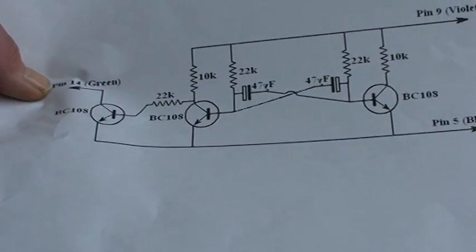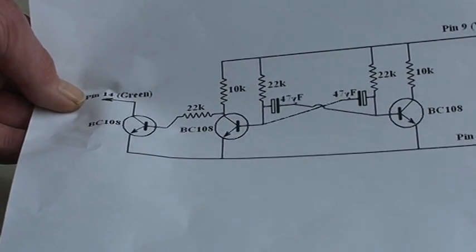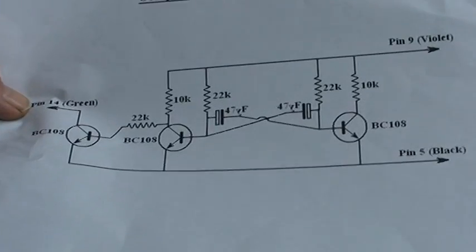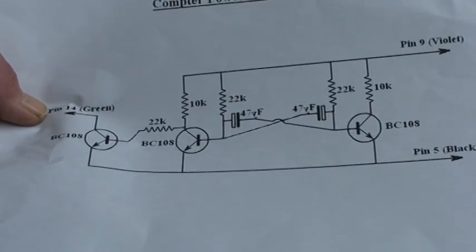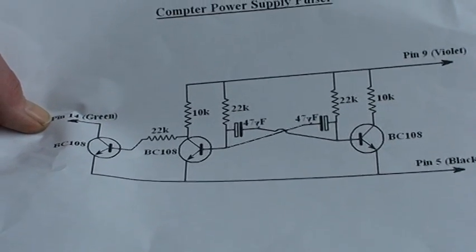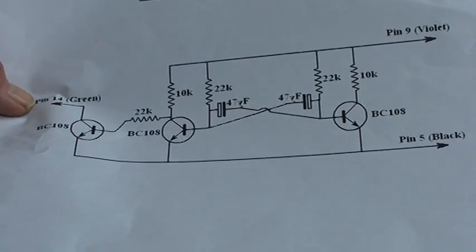The two 22K resistors and the two 47 microfarad capacitors are the timing elements of this multi-vibrator and they give a marked space ratio of roughly about a second, which will cause the valve to pulse every second.